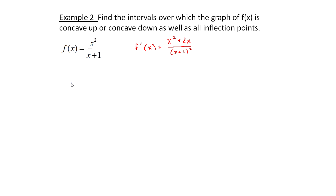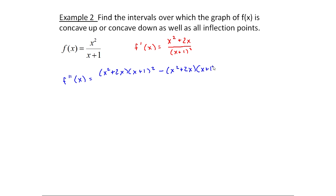This second function is also one we worked with before, and we found its derivative. I need to figure out where this function has a concave up shape and where it has concave down. So I need the second derivative. Looking at f prime, to find f double prime I'll have to use the quotient rule. I'll write out the product of the numerator and denominator twice, subtract them — first thing gets prime, second thing gets prime — and divide by the denominator squared, so x plus 1 to the fourth power.